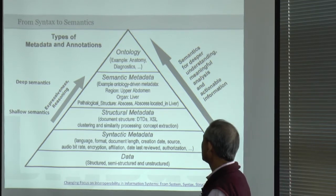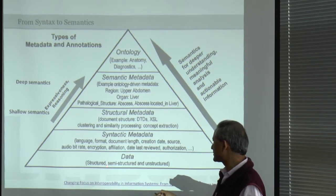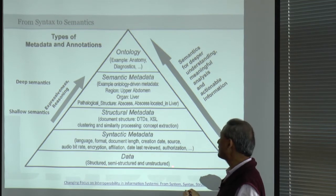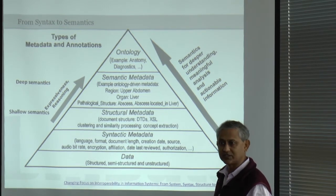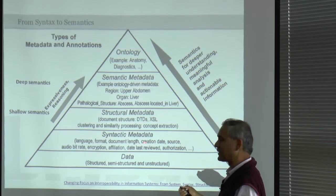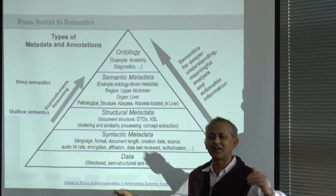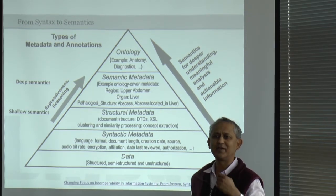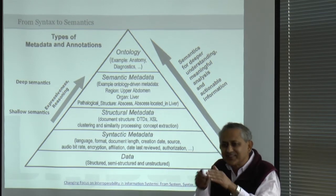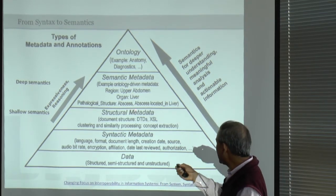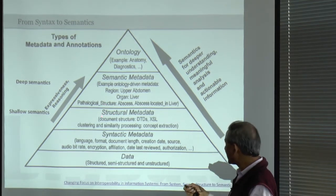One way to go from syntax to semantics: at the lower level you have data — structured, semi-structured, unstructured, different modalities like image data, video data, gene sequencing data. Then comes syntactic metadata — things you can easily and uniquely identify, like file size, encryption, or calling API. These do not deal with what is in the data. Then there is structural metadata about how the data is organized, so you can easily navigate through the data.